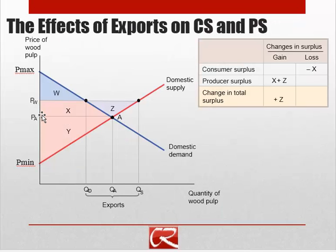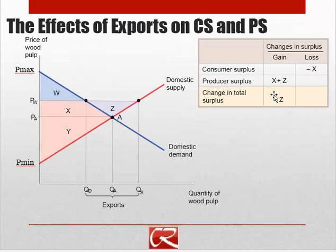Once trade opens up and sellers are able to export, they now get this higher world price. So their producer surplus is everything below the world price and above the supply curve — their new producer surplus is X plus Z plus Y. X used to be part of consumer surplus but is now part of producer surplus. So while producers have gained X and Z, from an overall societal point of view, X was just a transfer from consumers to producers. The total net gain for society as a whole is area Z.